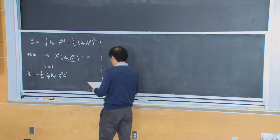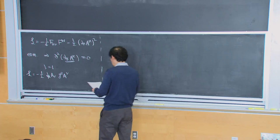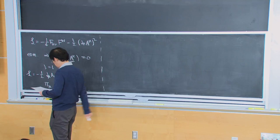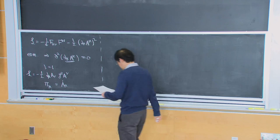For example, the canonical momentum conjugate to A_mu would be just A_mu dot. And the canonical quantization condition is then given by the standard equal-time commutation relations.